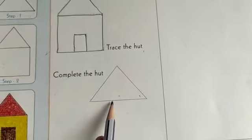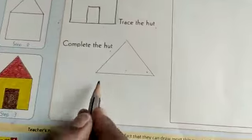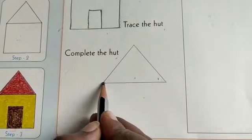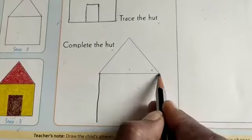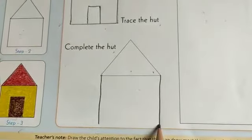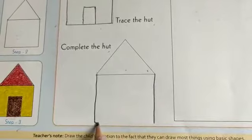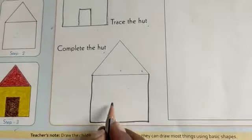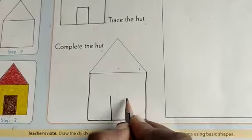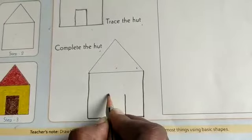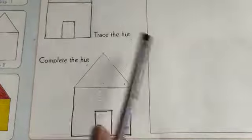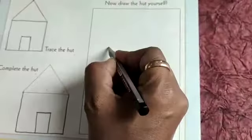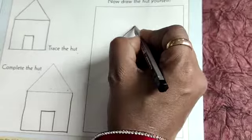Now complete the hut means there is only triangle given to you. Now we are going to make a square. You know standing line and sleeping lines no children? With that only we are going to draw the hut. Same thing you need to follow children. Again here. Here is an empty space given to you to draw a hut.